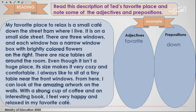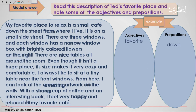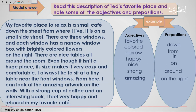This paragraph is filled with adjectives and prepositions — that's why I said note some of them down. Let's check your answers all together. The adjectives are: favorite, colored, narrow, happy, nice, strong, amazing, comfortable, interesting, relaxed. The prepositions are: down, from, in, on, on the right, and so on.